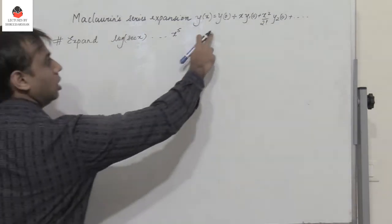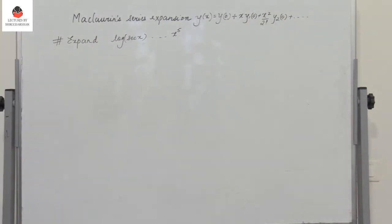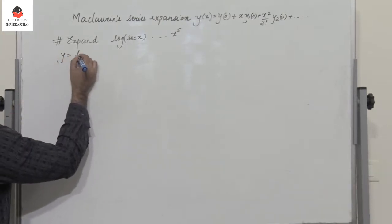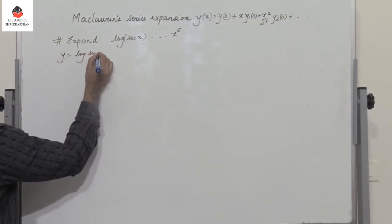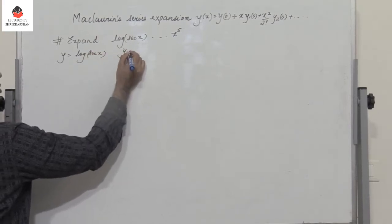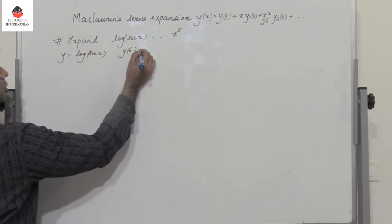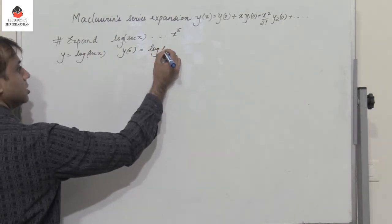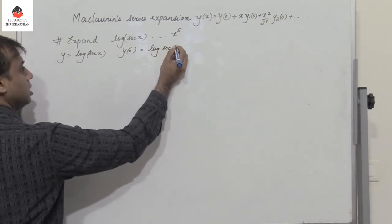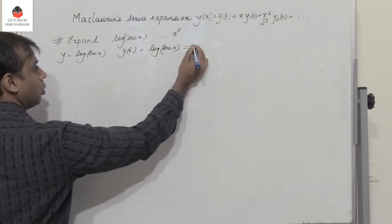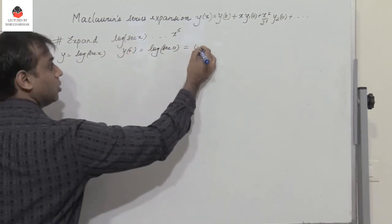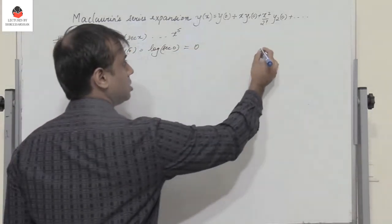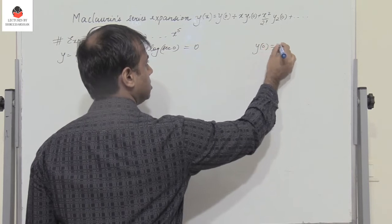Next question: using Maclaurin series, expand log(sec x) up to x^5. So y = log(sec x). Put x = 0: sec(0) = 1, log(1) = 0. So y(0) = 0.